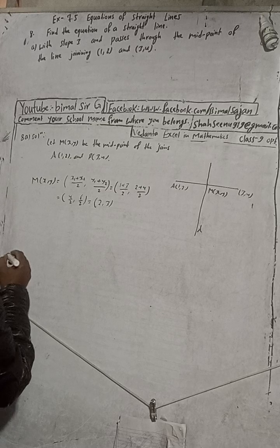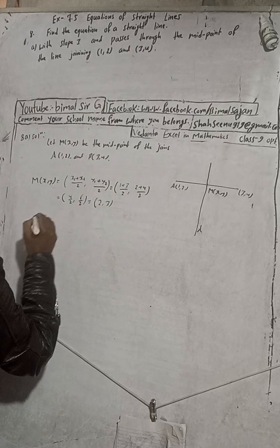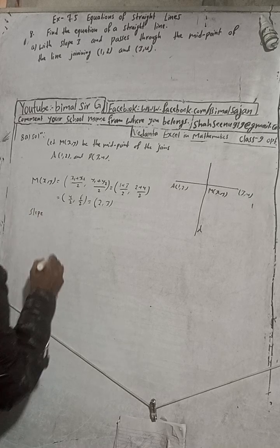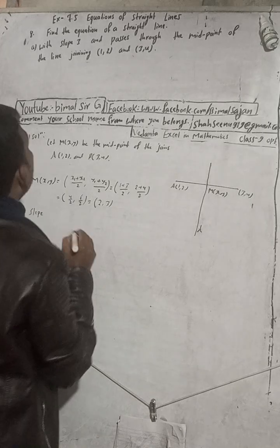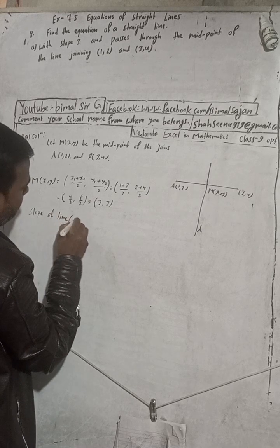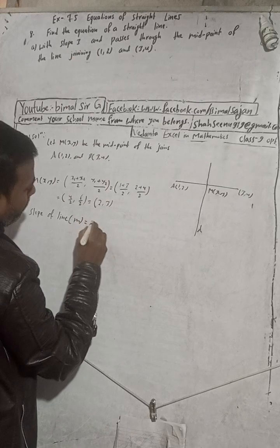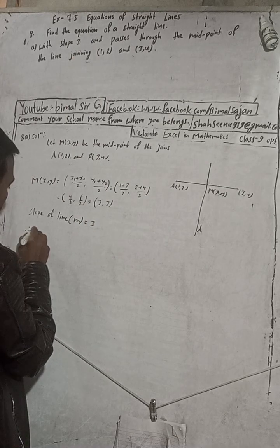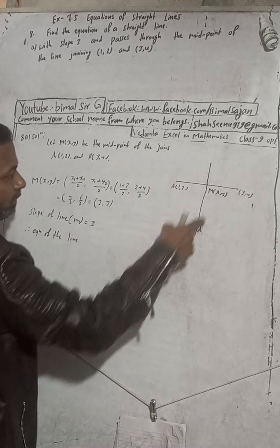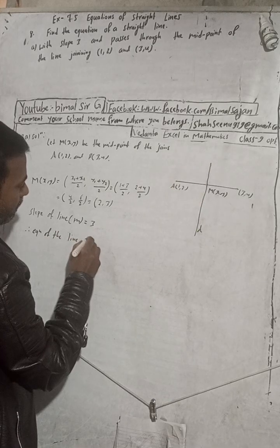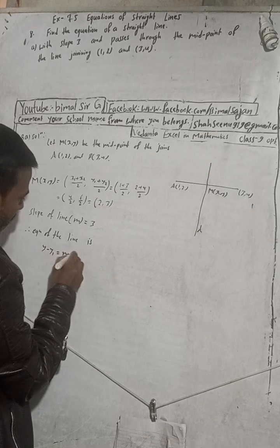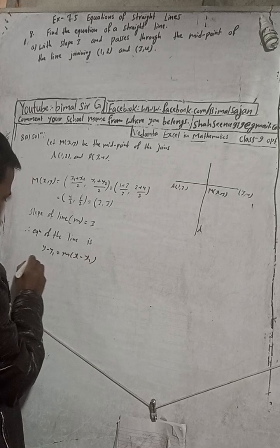Now we find the equation of the line. The slope m is equal to 3. The equation of the line is: y minus y1 equals m times (x minus x1).